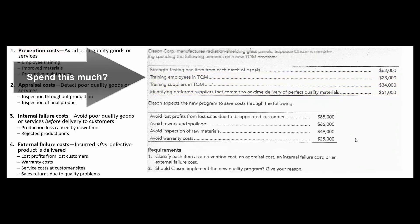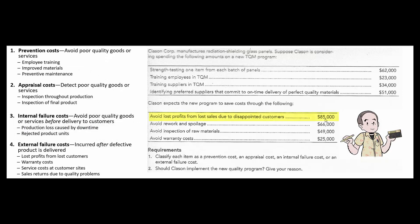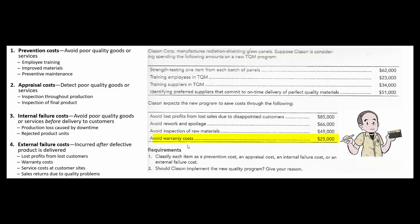Those are the four costs that we're incurring. What about the four costs that we're going to avoid? We're going to avoid lost profits — that's an external failure cost we're avoiding. We're avoiding rework and spoilage — that's an internal failure cost. Avoiding inspection of raw materials is an appraisal cost we'll save, since our preferred suppliers give us perfect materials we don't need to inspect. And finally, avoiding warranty costs — that's another external failure cost we're avoiding.